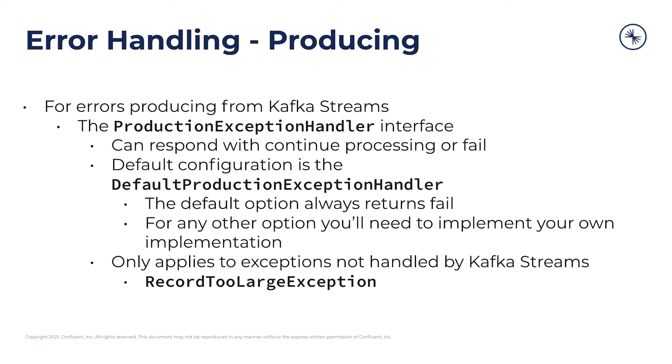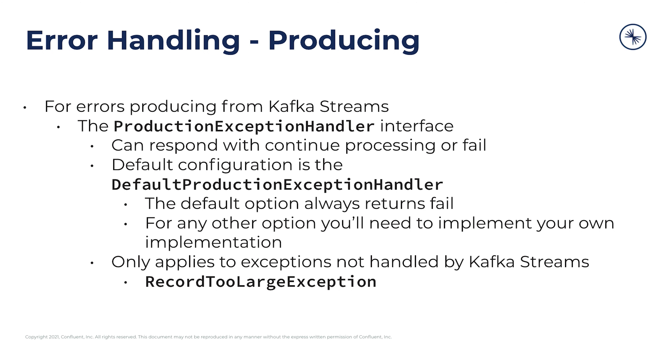Lastly, we have the production exception handler for any errors that you might hit while trying to produce records from Kafka Streams to the broker. The production exception handler is again just an interface that allows you to specify what you want to do should an exception occur. You can respond by choosing to continue processing, or you can choose to fail. The default configuration is the default production exception handler, which returns the option to always fail. Note that this only applies to exceptions which are not handled by Kafka Streams internally. A number of exceptions like producer fenced exception would be handled internally, but there are some more user or application-specific exceptions which Kafka Streams does not know how to handle, and these are what would be passed on to the production exception handler.